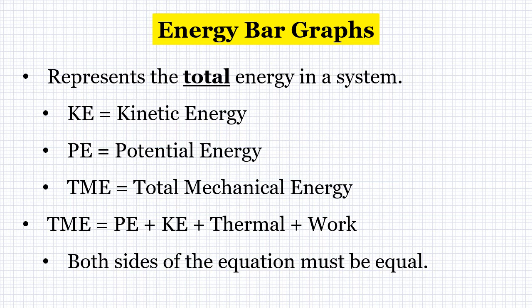These bar graphs represent the total energy in a system. The total mechanical energy is simply the sum of all of the other energies in our system: the potential, kinetic, thermal and work energy. Both sides of the equation must be equal and energy is conserved always.